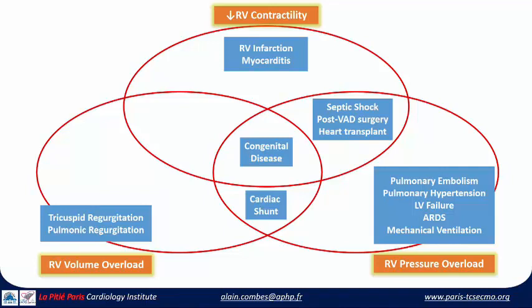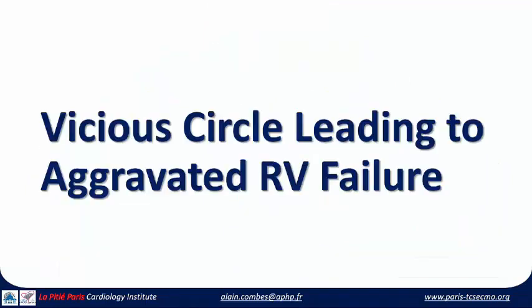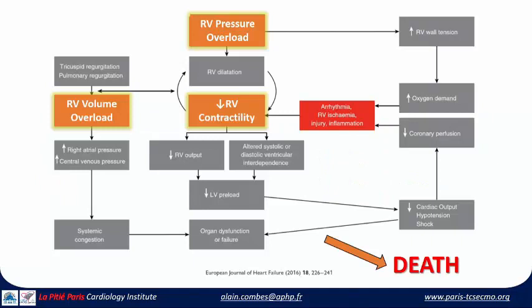We have patients with a mix of decreased contractility and increased overload — for example, septic shock — and a very specific group after cardiac surgery, such as post heart transplant implantation. When discussing severe RV failure, it forms a vicious circle: RV pressure overload and decreased contractility lead to arrhythmia, ischemia, inflammation, injury, increasing oxygen demand, decreasing coronary perfusion, and ultimately a decrease in cardiac output, severe hypotension, shock, and death if correct management is not performed in a timely manner.